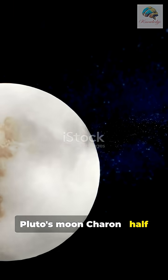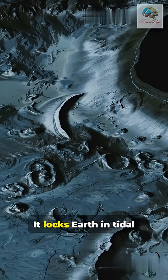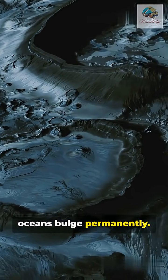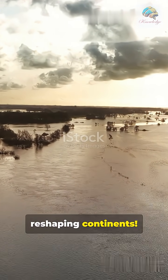First, Pluto's moon Charon, half the size of Pluto itself. It locks Earth in tidal forces so strong oceans bulge permanently. Megatides flood coasts daily, reshaping continents.